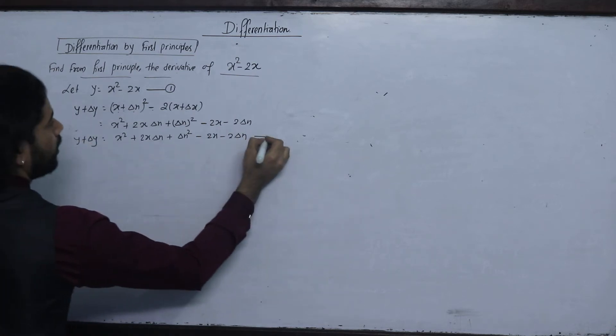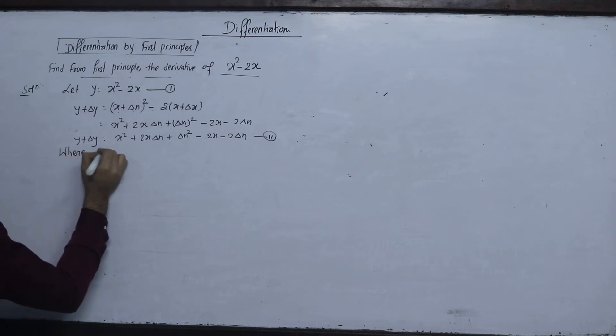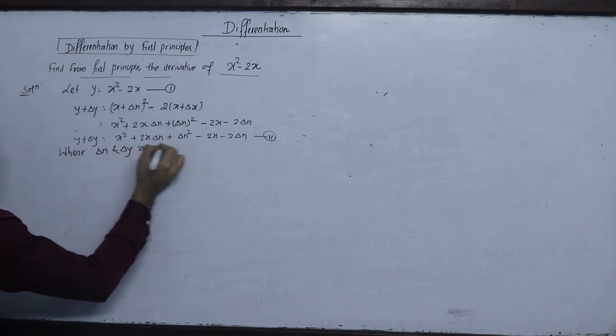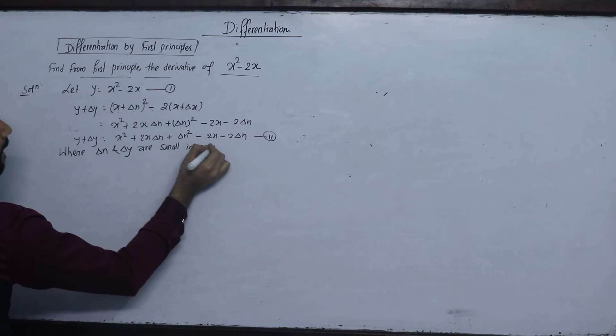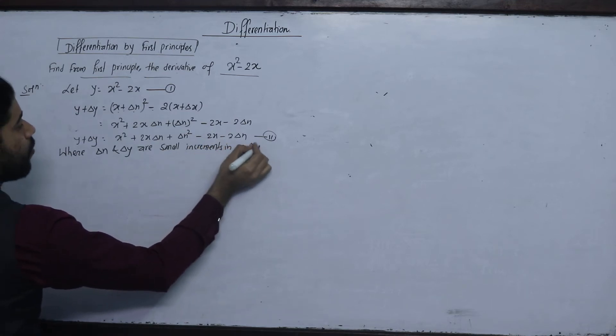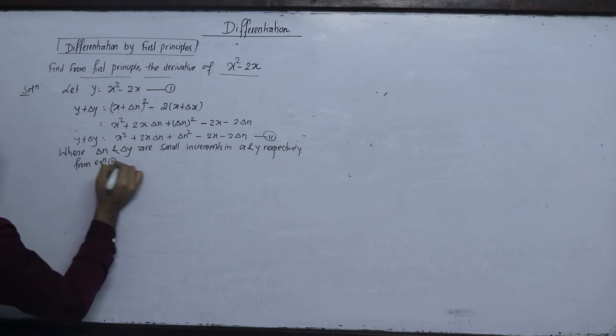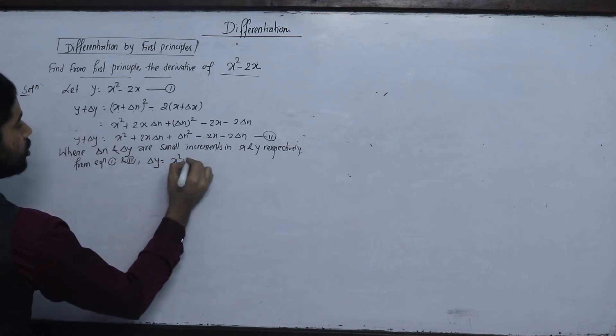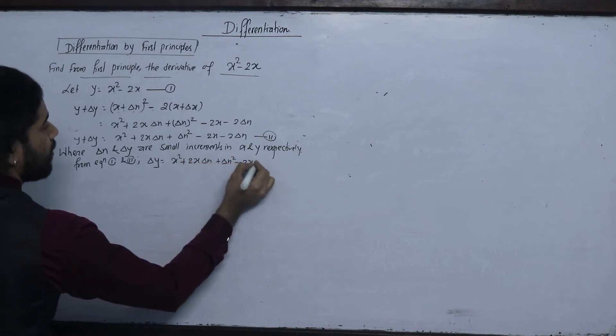x square plus 2x del x plus del x square minus 2x minus 2 del x, plus delta y, where delta x and delta y are small increments in x and y respectively. x square plus 2x del x plus del x square minus 2x minus 2 del x.